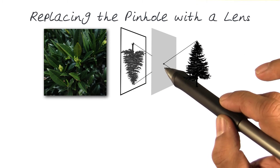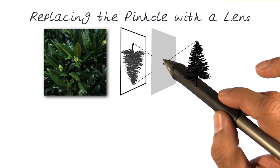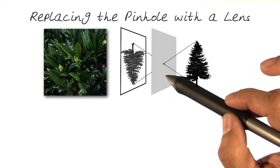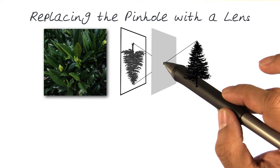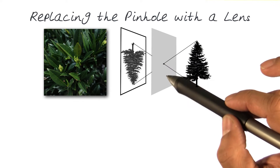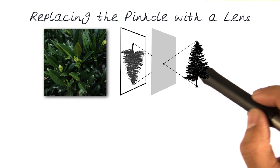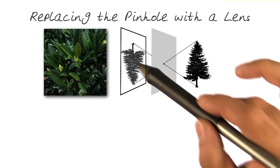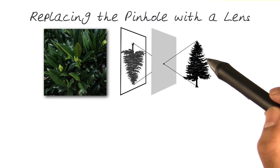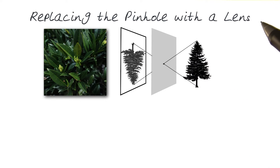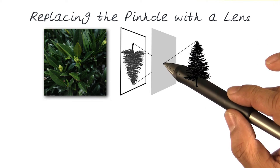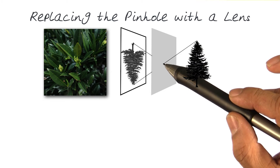What we want to do is open this up a little bit more so more light will go through. The size of this opening is going to be important for the amount of light that passes through from the obstruction to the other side to form an image. So one of the best ways, of course, to do this is to replace this hole with a lens.